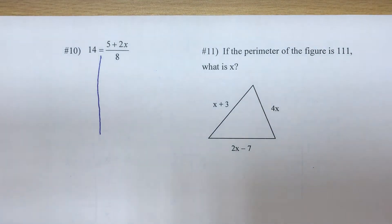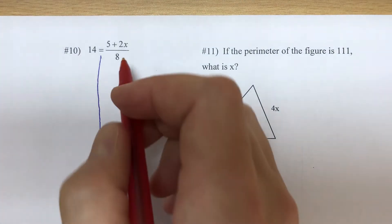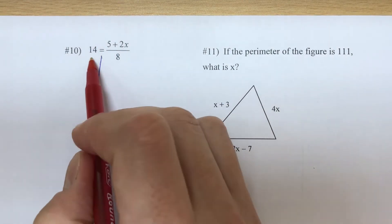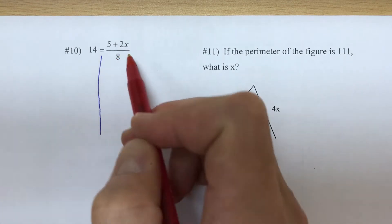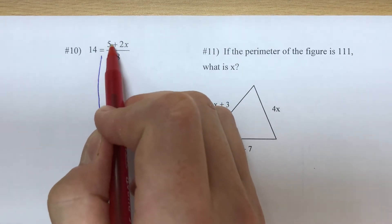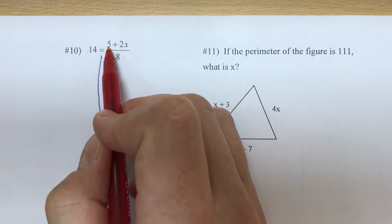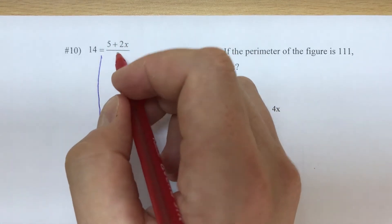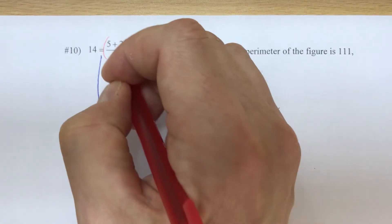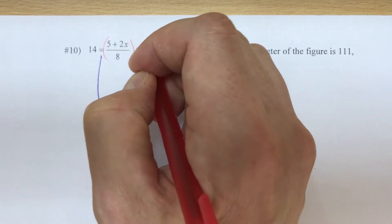All right, so my first move here - I'm always focused on the x. The x is on the right side, so that's where I'm going to begin. Now I'm tempted to do minus five, however both of these terms are being divided by eight, so I cannot just do that.